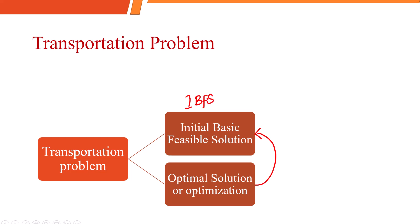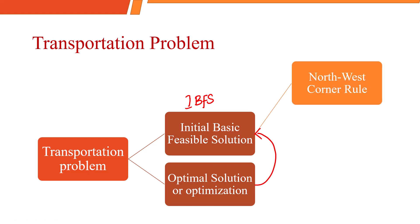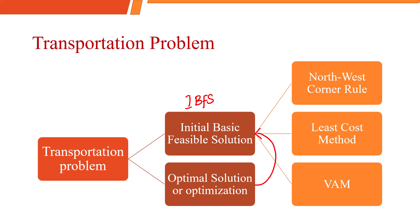Only then we can go for the optimal solution. To obtain IBFS, we have three different methods. The first method is NWC, the second is the least cost method, and the third is Vogel's approximation method. In this specific video, I will be walking you through the Northwest Corner rule. Let's get it started.